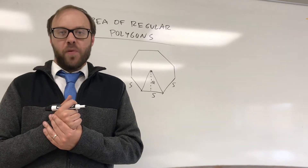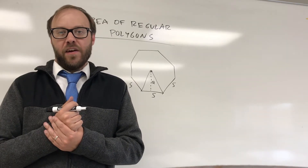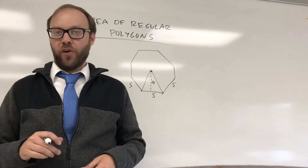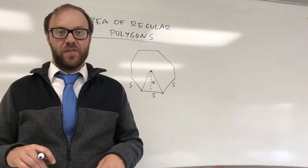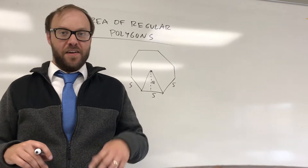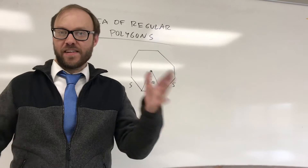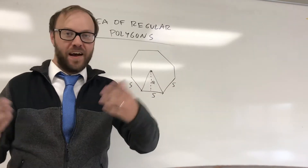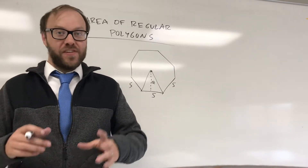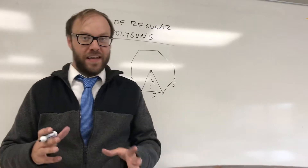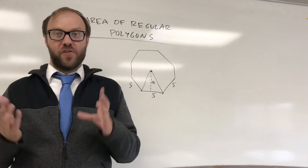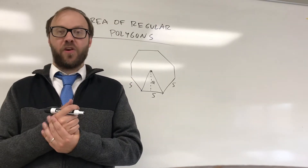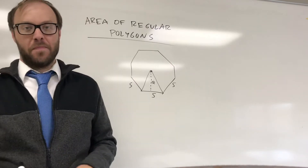In this video, I'm going to create a formula to find the area of a regular polygon. This is a formula that will work for any regular polygon, whether it's got five congruent sides (pentagon), six congruent sides, seven congruent sides (heptagon). This will even work for an equilateral triangle or a square. It will work for any regular polygon.